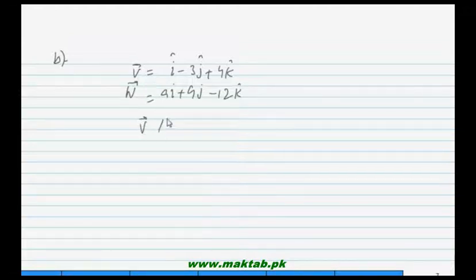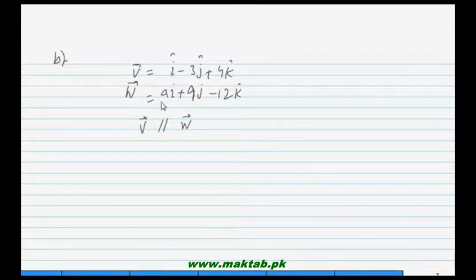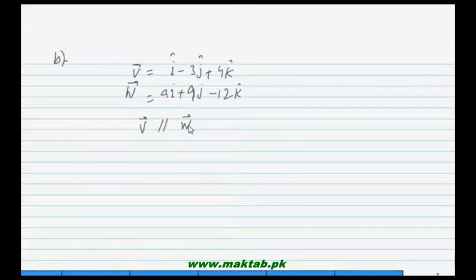We are given that v vector is parallel to w vector, and we need to find the value of a. Two vectors are parallel when one is a scalar multiple of the other, so we set v equal to c times w.